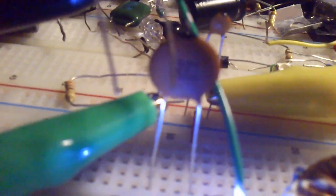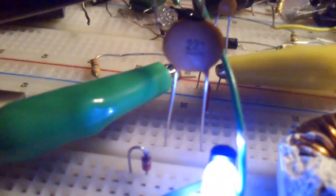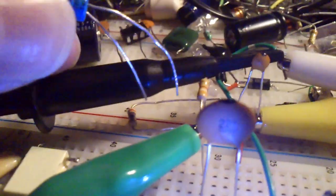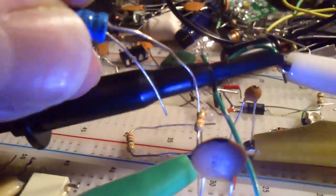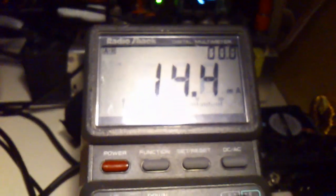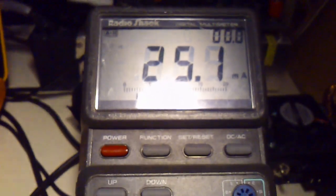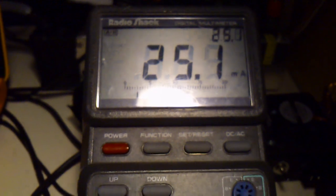Also, with these settings right now, it's a 220 picofarad in parallel with I think a 3.9k ohm resistor. And also I got my good old trusty amp meter hooked up, and right now I'm actually drawing 25.1 milliamps at unknown voltage.